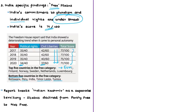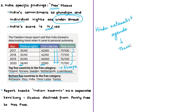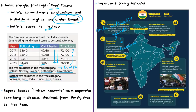The top-performing countries in the free category are mostly from Europe: Finland, Norway, Sweden, Netherlands, and Luxembourg. The report attributes India's falling score to government policies based on a Hindu nationalist agenda that abrogates the rights of its Muslim population. Other setbacks listed include localized internet shutdowns and the controversial citizenship register. Notably, the union territories of Jammu & Kashmir and Ladakh are shown as a separate territory — an unacceptable element in this report.